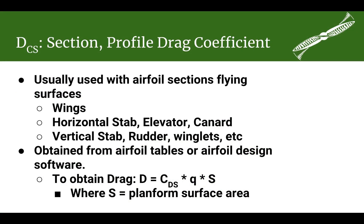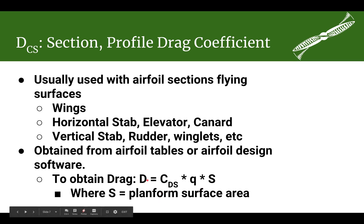One form of parasitic drag that you will see is suction drag or profile drag, and there will be a coefficient of that kind of drag which has a sub-CS. You will generally only use this with flying surfaces such as wings, stabilizers, canards, etc. These suction drags or profile drags you will obtain from airfoil tables or airfoil design software, and you will get a coefficient of drag for the airfoil — a section drag. You multiply it by your dynamic pressure and your plan form surface area, which is the area as you are looking from the top of the wing or from the side of your vertical stabilizer and rudder, counting only one side. That would roughly give you the drag for your wing.